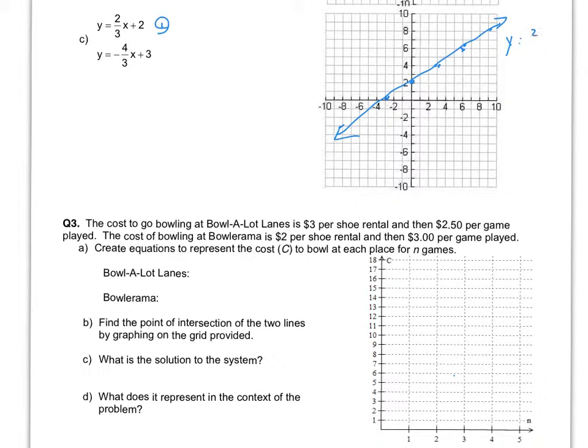So that's y equals 2/3x plus 2, and then the second line has a y-intercept of 3, and it has a slope of negative 4 over 3.